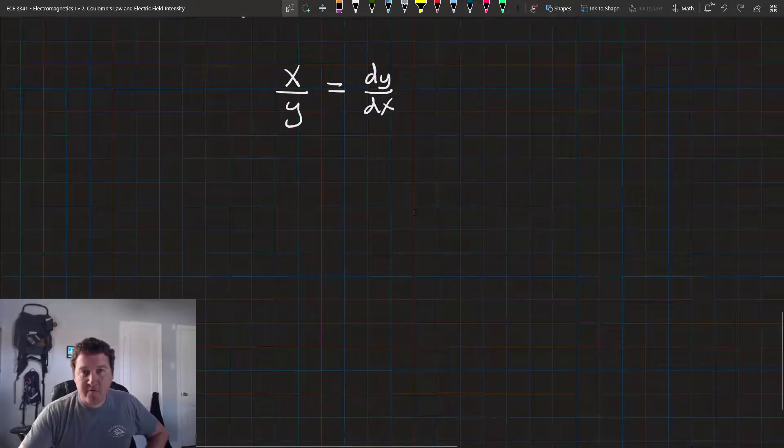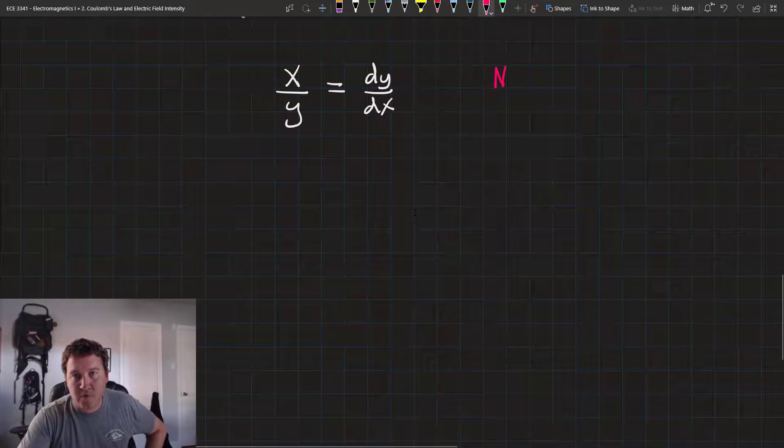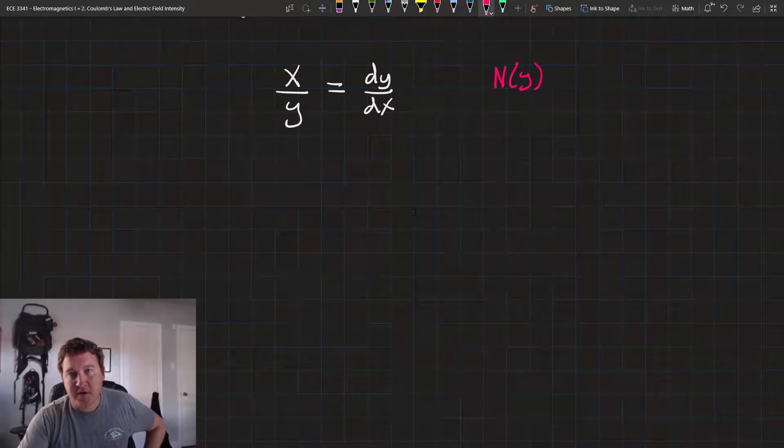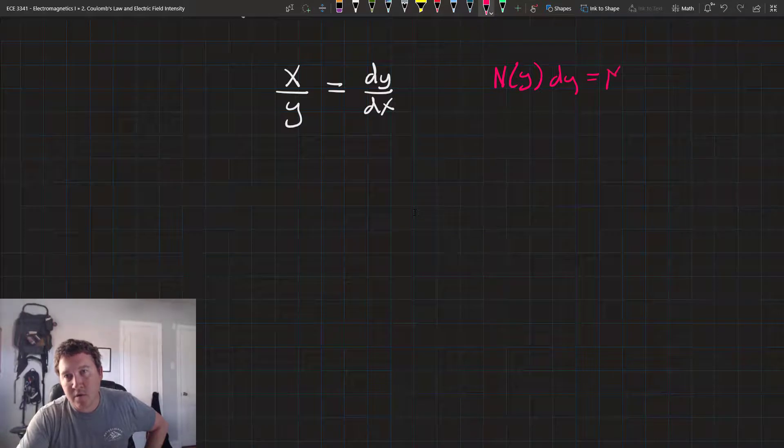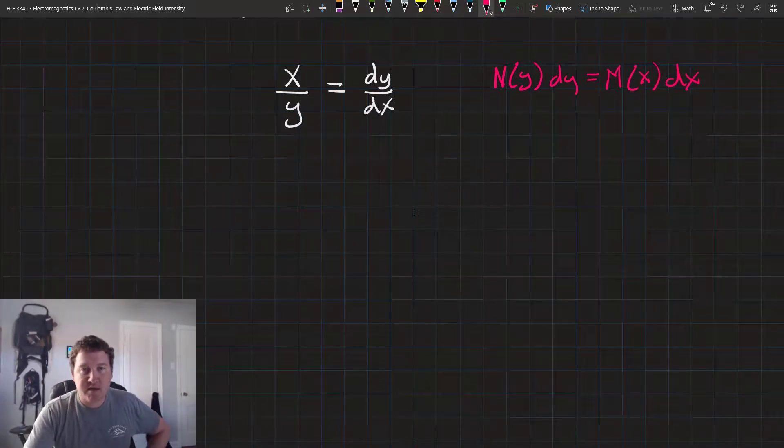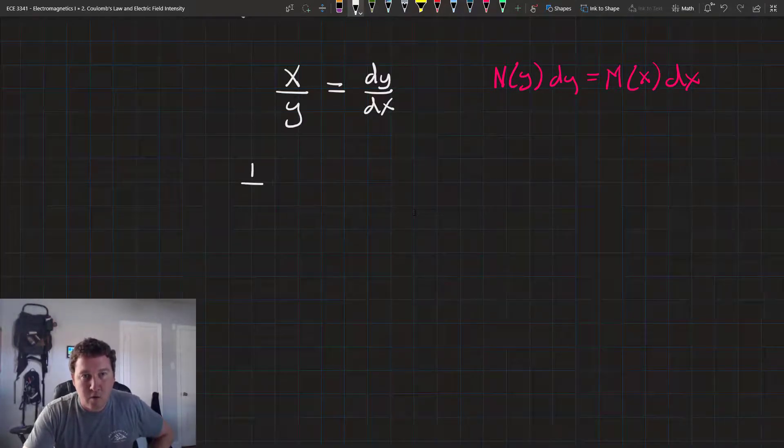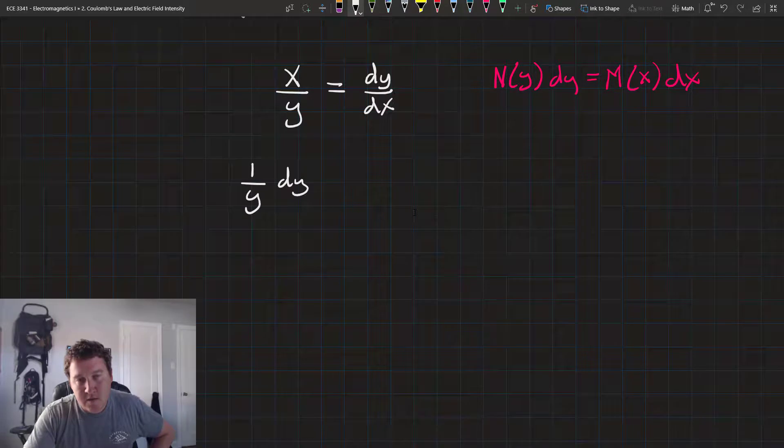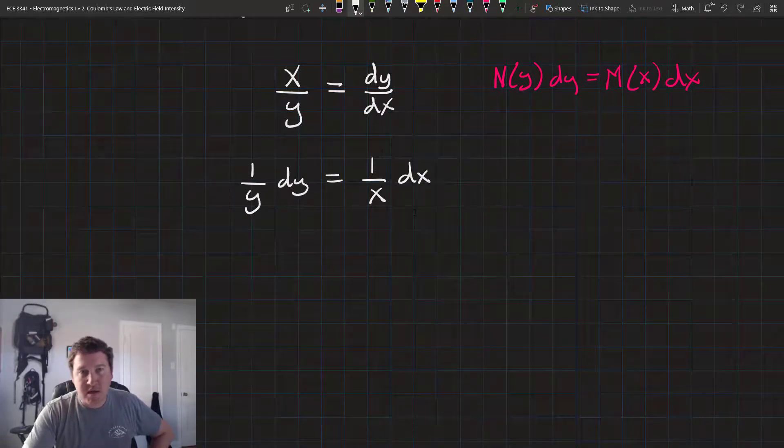Now, we're ready to follow the technique for solving our separable differential equation. Remember, we want it in the form function n of y times dy equals the function m of x times dx. So, we'll rearrange this a little bit and we'll get 1 over y dy equals 1 over x dx.